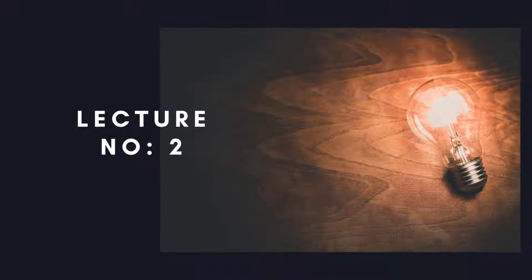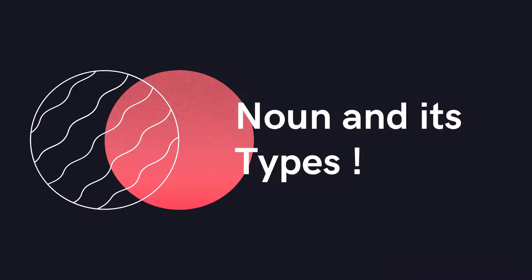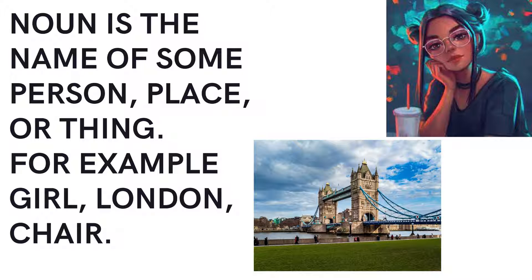Lecture number two: Noun and its types. A noun is the name of some person, place, or thing. For example: girl, London, chair.